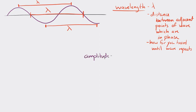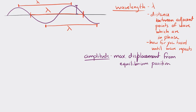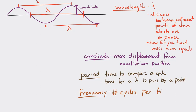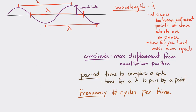Amplitude is the maximum displacement of the medium from its equilibrium position. Period is the time it takes to complete one cycle, or in this case it can also be defined as the time it takes for one wavelength to pass by a point. And frequency is defined as the number of cycles per time.